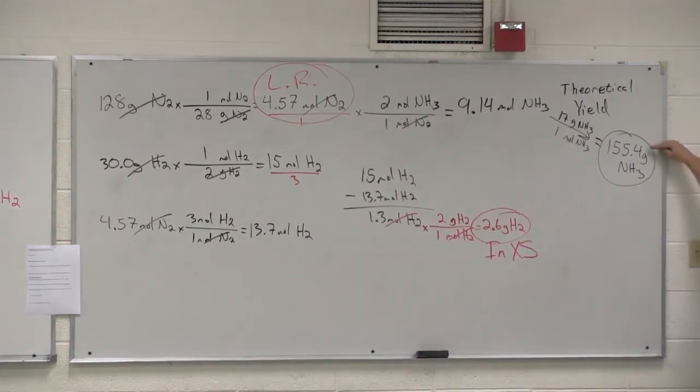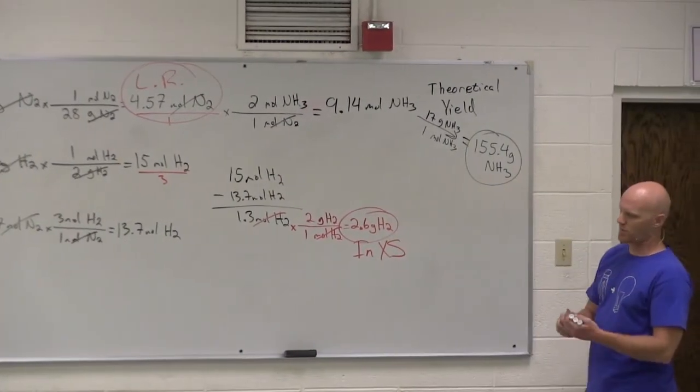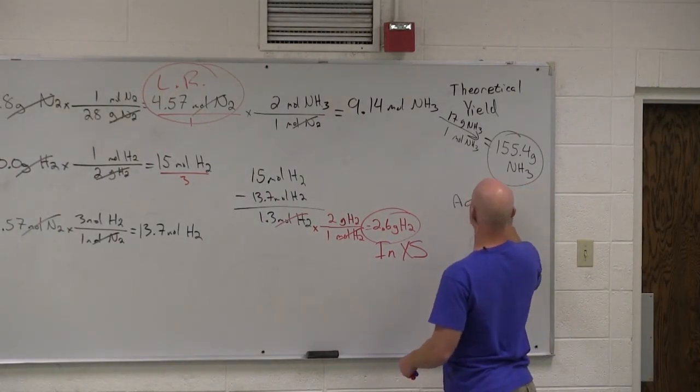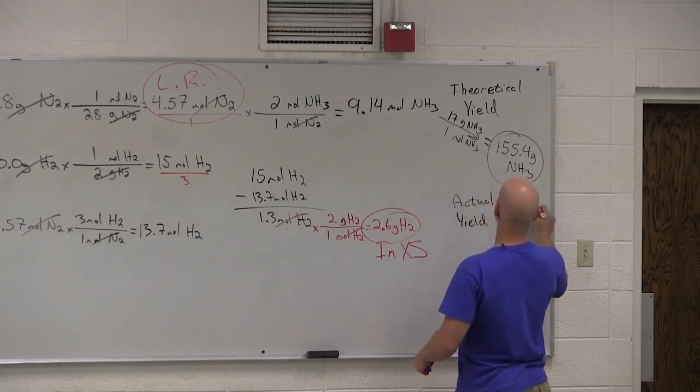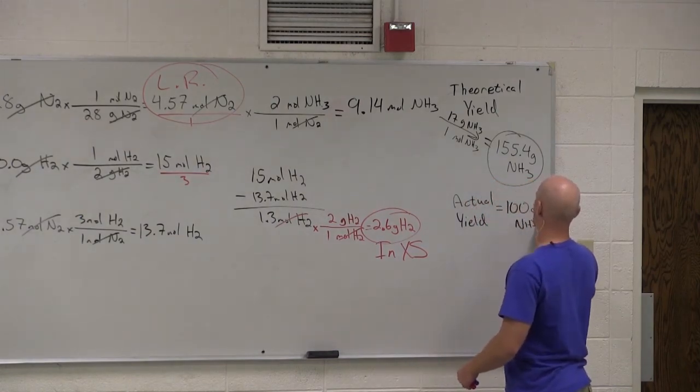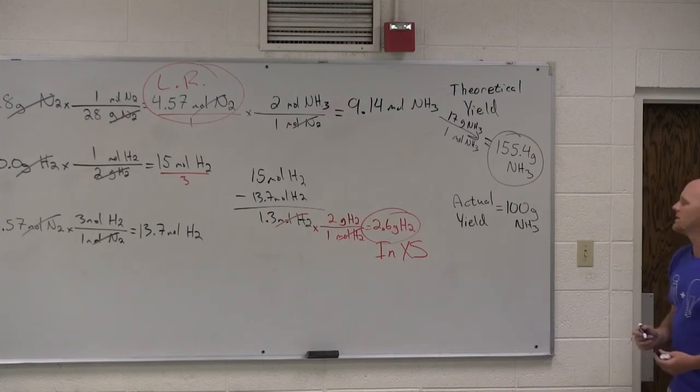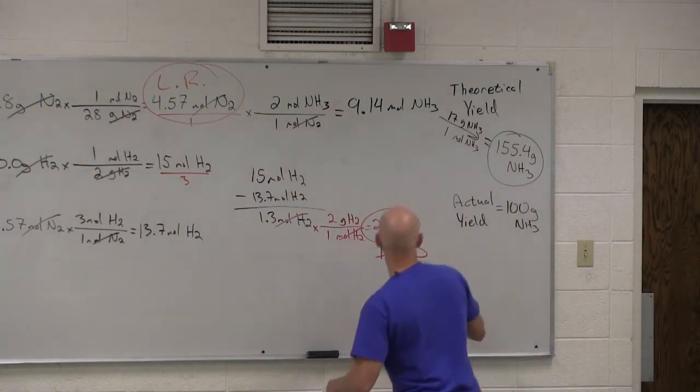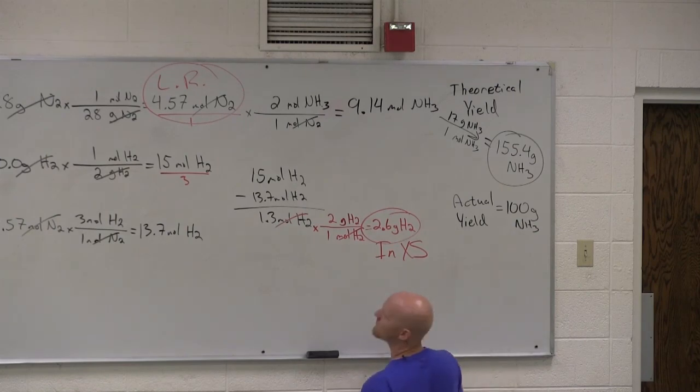Same kind of thing here. We expect a maximum of 155.4 grams. What if I told you that our actual yield, when we did this reaction, was only 100 grams of ammonia. That's all we produced. So, then what would be my percent yield in this case? Take theoretical minus actual over theoretical. Not? Is that what you did when we did the oranges? No. It's not.